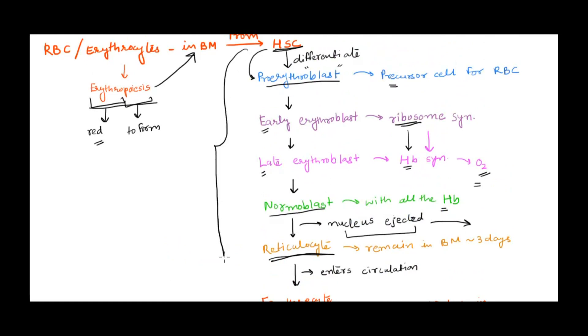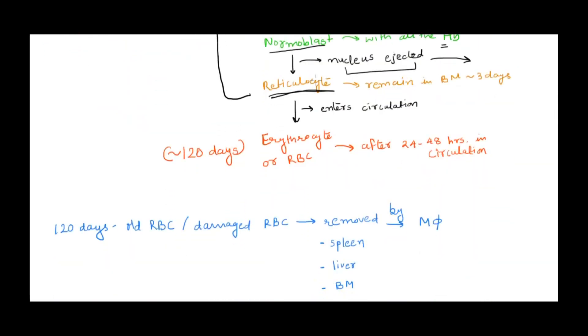From stem cell to reticulocyte, this complete process occurs in bone marrow. Once the nucleus is removed, it's called reticulocyte. It remains in bone marrow for about three days before entering circulation, then stays in circulation for 24 to 48 hours before becoming mature erythrocyte or mature RBC.